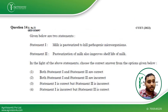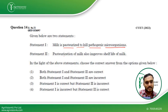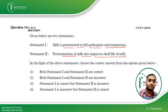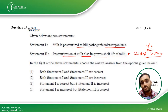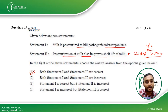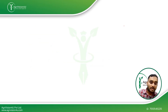Coming to Question 14: milk is pasteurized to kill pathogenic organisms — yes, this is correct; pasteurization is a mild heat treatment to kill pathogens. Pasteurization of milk also improves the shelf life of milk — yes, this is correct; it increases shelf life, and it is also coupled with chilled storage at 4°C. The cold chain is maintained at 4°C, and the packaged milk you receive at home is pasteurized and maintained at 4°C. Both statements are correct, making the first option the right answer. This question was asked in CUET 2022.